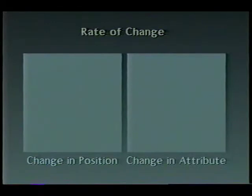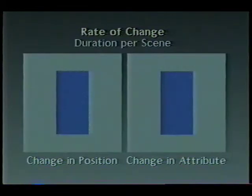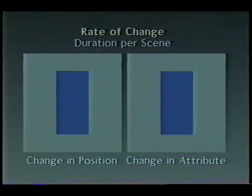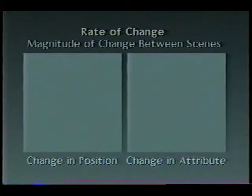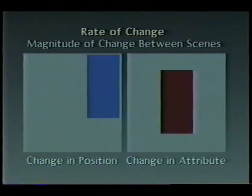Two kinds of change between scenes appear to be possible in cartographic animation: change in the position of an entity in a scene, and change in the attributes of an entity. Both kinds consist of changes in visual variables. Change in position is variation in the x and y dimensions of the plane, and change in attribute is variation of the other visual variables. The dynamic variable we call rate of change is comprised of two components: the duration of each scene, and the magnitude of change in position and attributes of entities between scenes.